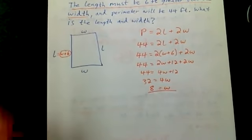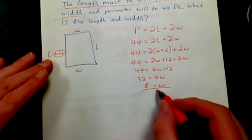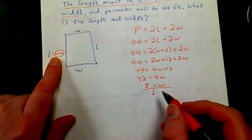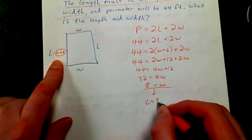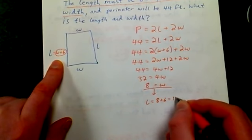So is that my answer? No, I want to know the width and the length, plus I don't even have a unit on that. If the width is 8, how can I figure out the length? The length equals 8 plus 6, which is 14.